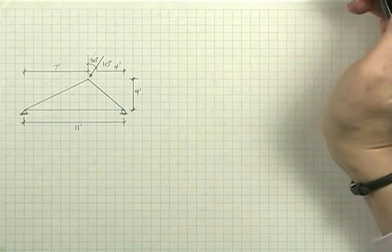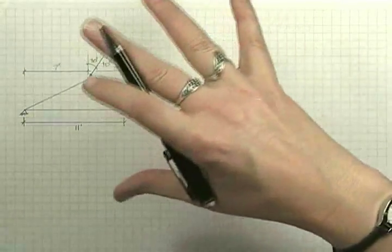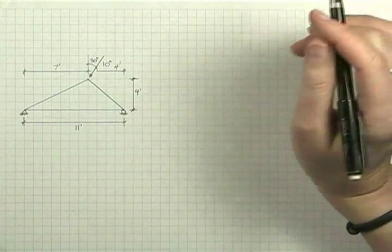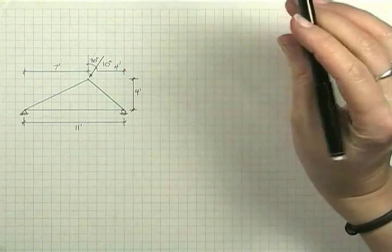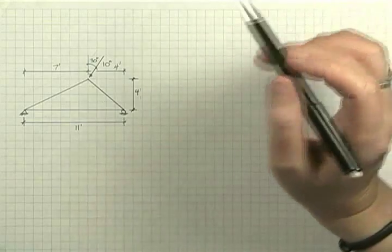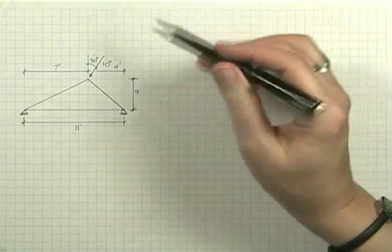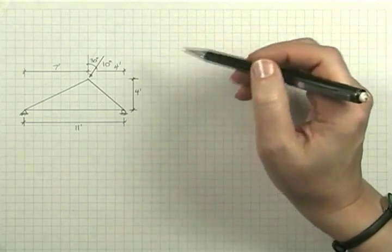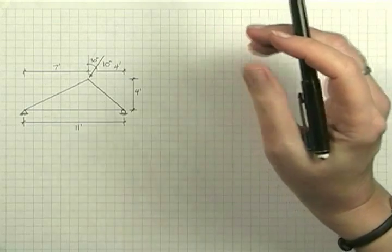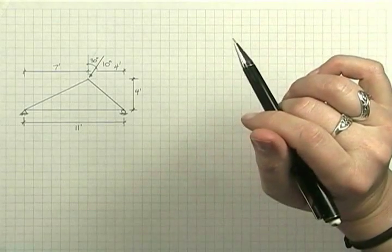We do this by recognizing that the balance of moments always is equal to zero for the entire system. What that means is that when we project the lines of action of all forces and reactions on a structure, they come together at one single point.